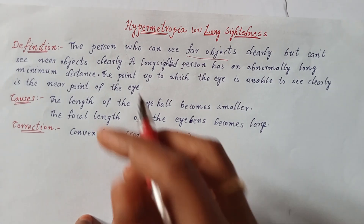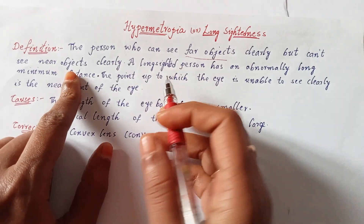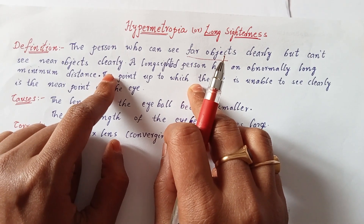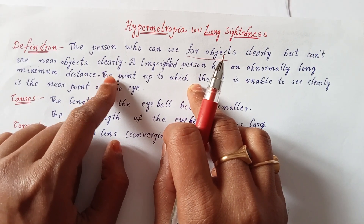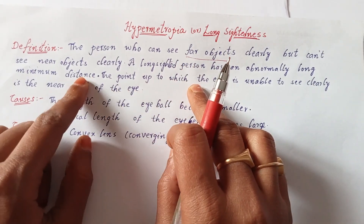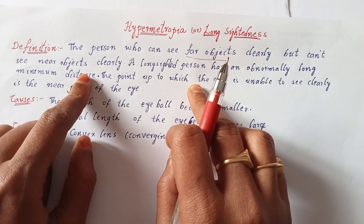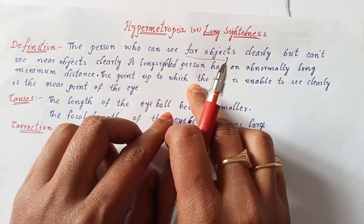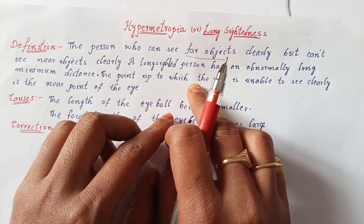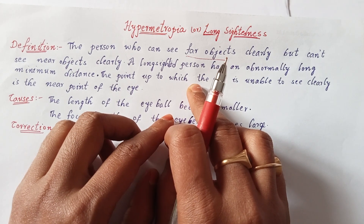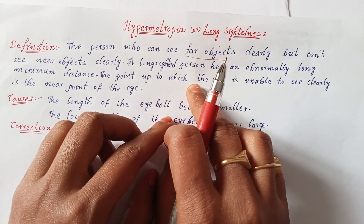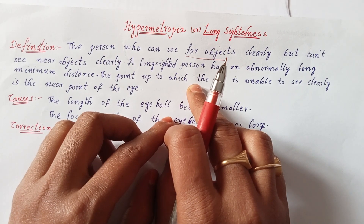Now let's start with the definition of hypermetropia. Hypermetropia is a defect of vision in which the person is able to see far objects clearly but is unable to see near objects clearly. For a healthy human eye, the near point is 25 centimeters and the farthest point is infinity.